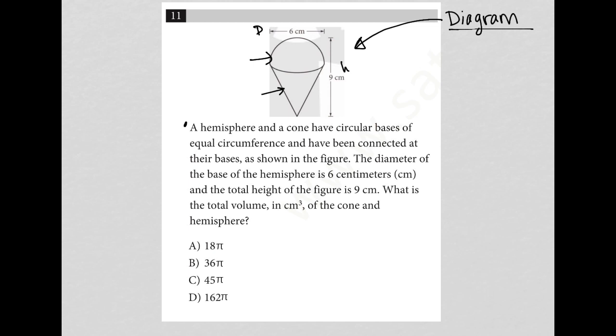Now let's read the question. The question says a hemisphere and a cone have circular bases of equal circumference. Okay, so the circumference is equal. I want to just underline that and have been connected at their bases, as shown in the figure. The diameter of the base of the hemisphere is 6 centimeters. We see that. And the total height of the figure is 9 centimeters. We also already saw that. What is the total volume in cubic centimeters of the cone and hemisphere?